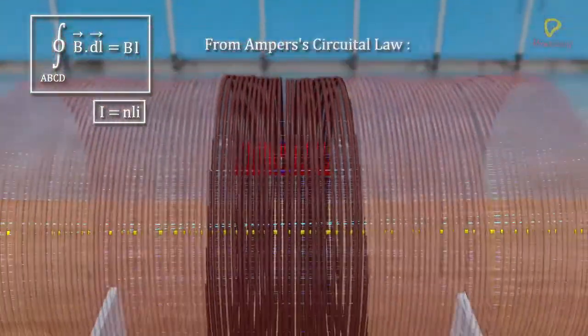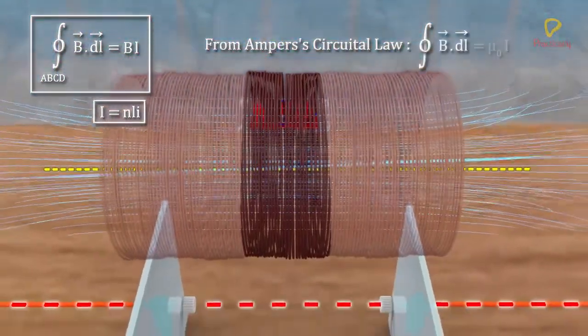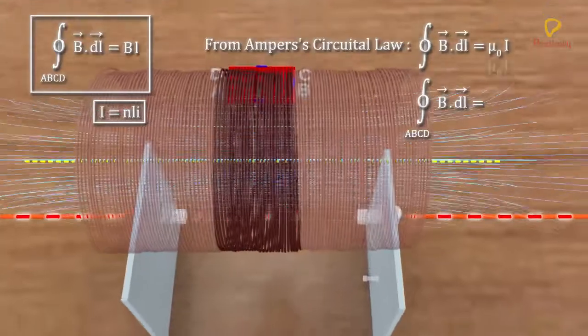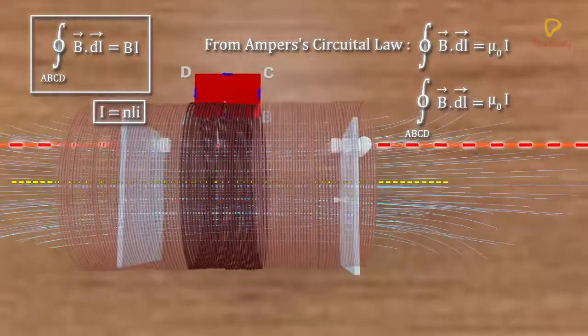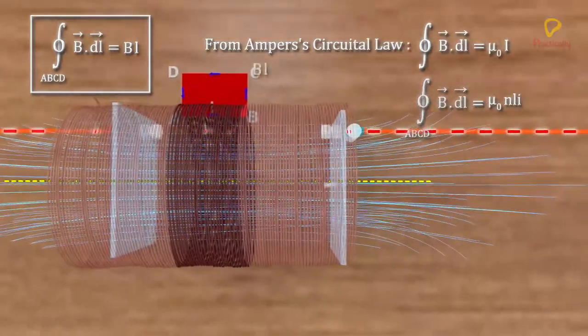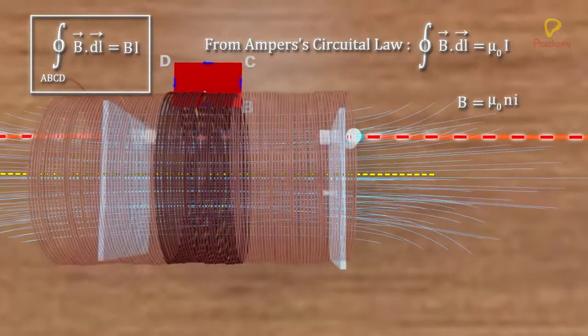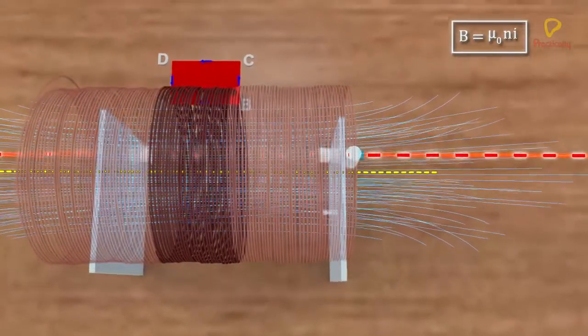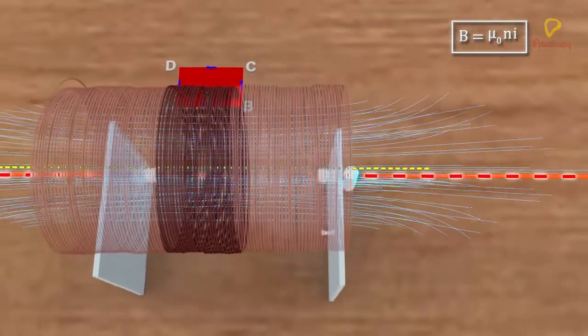From Ampere's law, line integral of B dot dL in the loop ABCD must be equal to μ₀nLi. On solving for B, we get B is equal to μ₀ni.